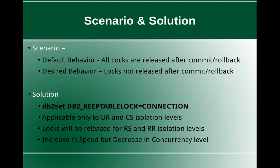This slide talks about the scenario and the solution. The default behavior for the DB2 database is all locks are released after a transaction commits or rolls back. The desired behavior demonstrated in this tutorial is that after a transaction commits or rolls back the locks are not to be released. The solution is we use the DB2 SET command to set a registry variable called DB2_KEEP_TABLE_LOCK. The value that needs to be set is 'connection', making the locks released at the connection boundary.